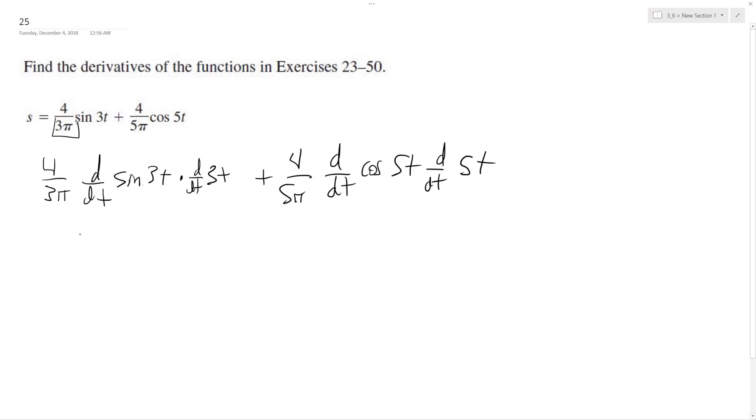So then what we end up with here is 4 over 3 pi times, and I take the 3 here, so that's 3, and then the derivative of the sine is the cosine of 3t, plus the derivative of the cosine is negative.